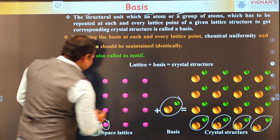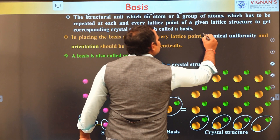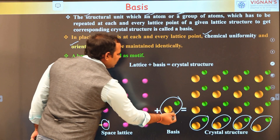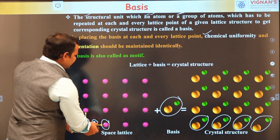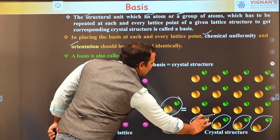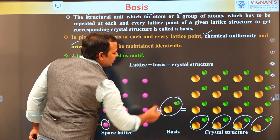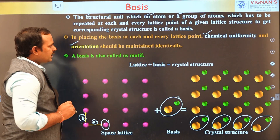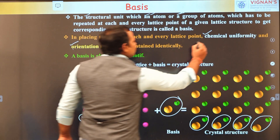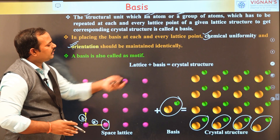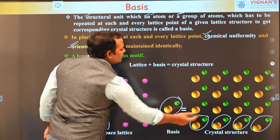When placing the basis at each and every lattice point, two important things must be understood: chemical uniformity and orientation of the basis. Chemical uniformity means that if the crystal is diatomic, both atoms must be placed in the same arrangement at every lattice point. The orientation must also be preserved. If you interchange the atoms or change their orientation, you will not get the correct crystal structure — you may get a disordered crystal.